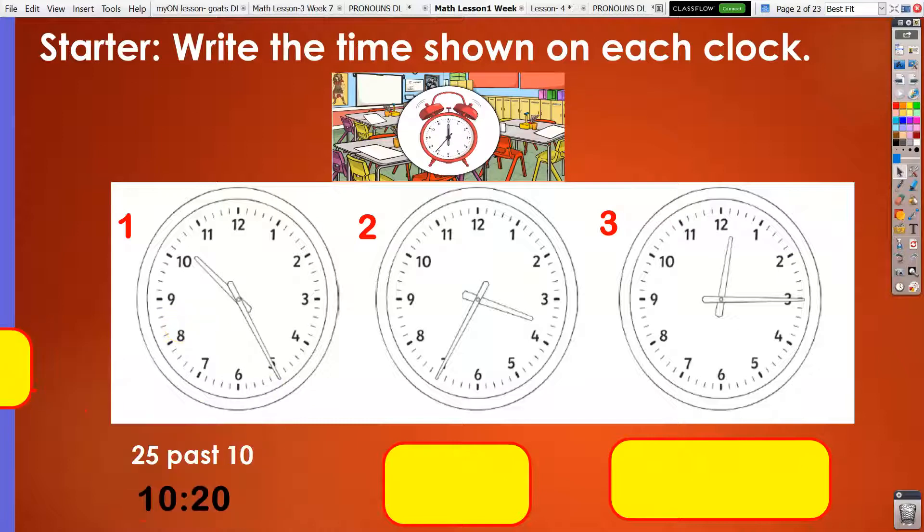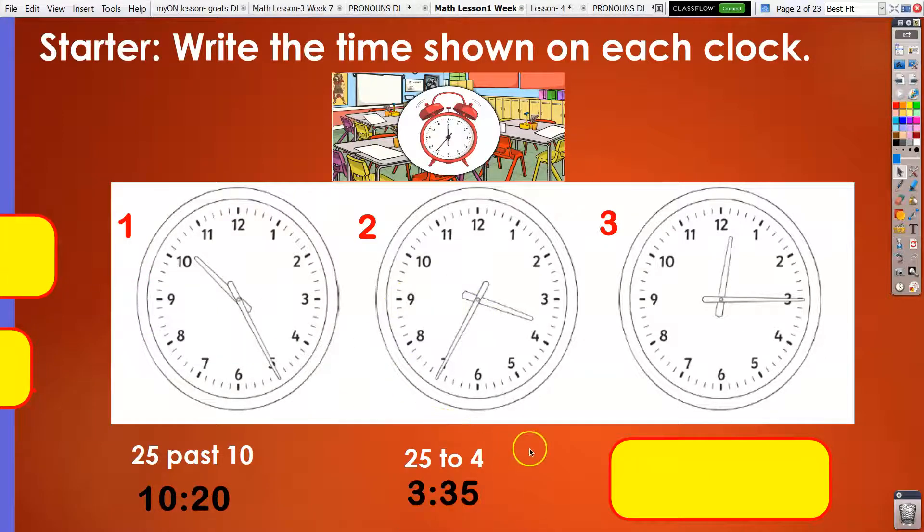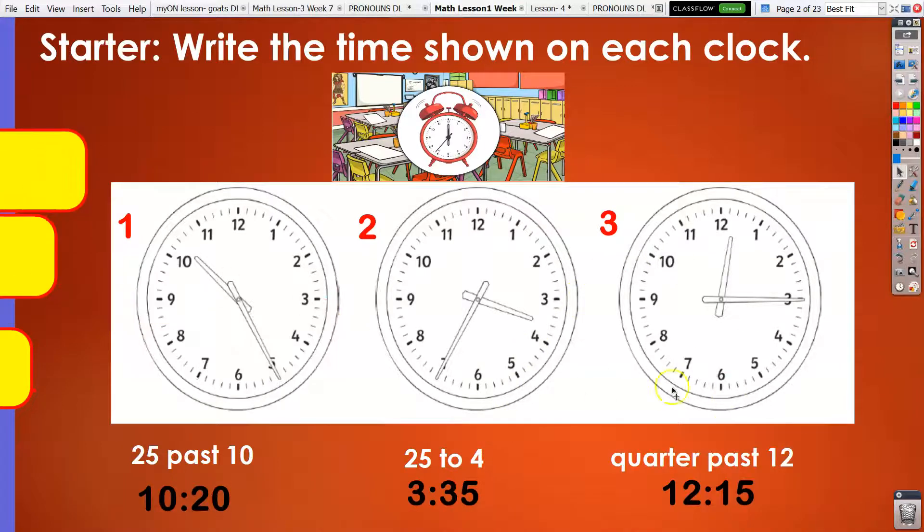Now let's reveal the answers. Clock 1, it's 25 past 10 or 10:20. Clock number 2, 25 to 4 or 3:35. And clock number 3, quarter past 12 or 12:15. Did you get the correct answers? Good job.